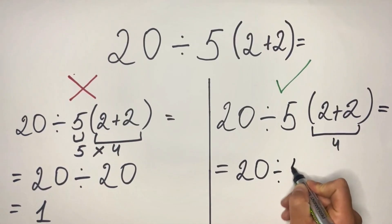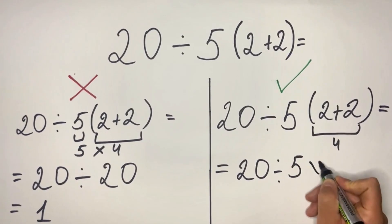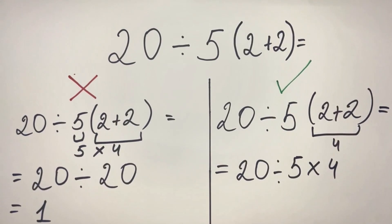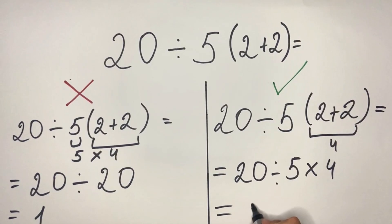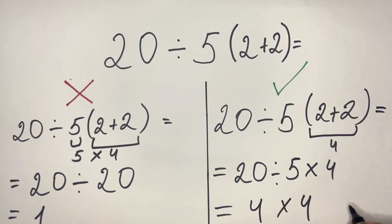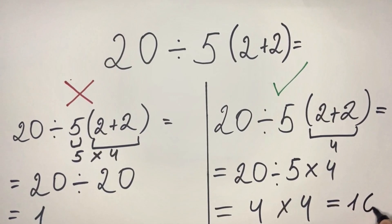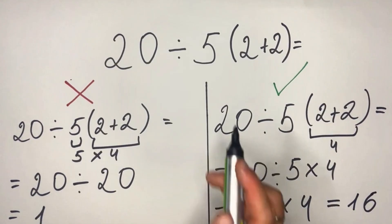Therefore, we get 20 divided by 5 and multiply by 4. So in the end, we get 20 divided by 5 is 4, so we get 4 multiplied by 4, and the result is 16.